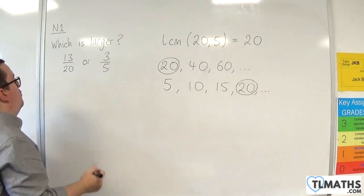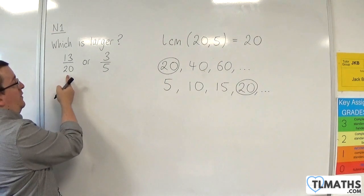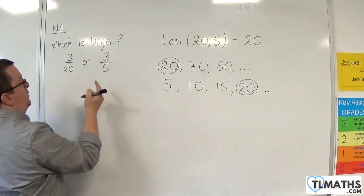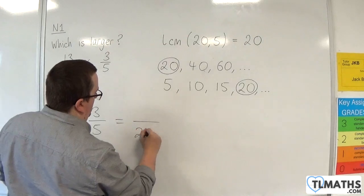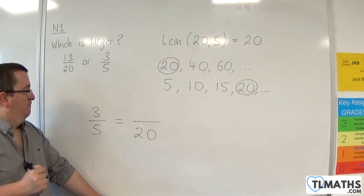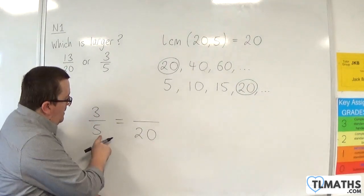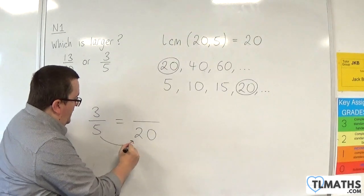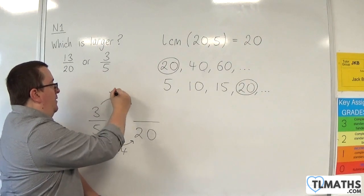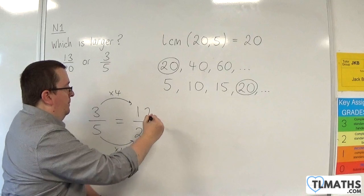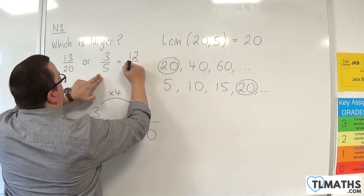So, that means that I can write both of these as something over 20. Now, of course, that one is already 13 over 20, so I don't need to do anything to it. But the three-fifths, however, I need to write as something over 20. Now, if I've converted from fifths to twentieths, I must have multiplied the denominator by 4. 5 times 4 is 20. So, you need to multiply the numerator by 4. 3 times 4 is 12. So, 3 fifths is equal to 12 over 20.